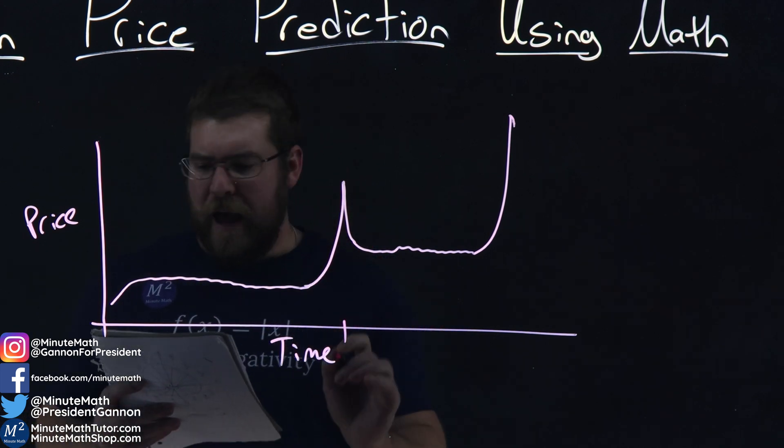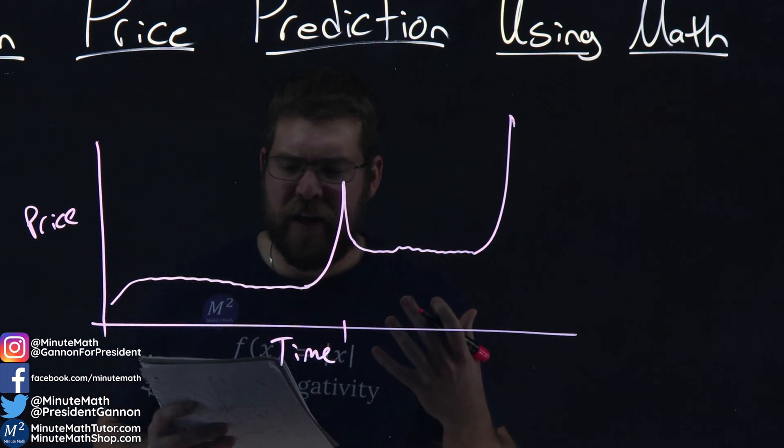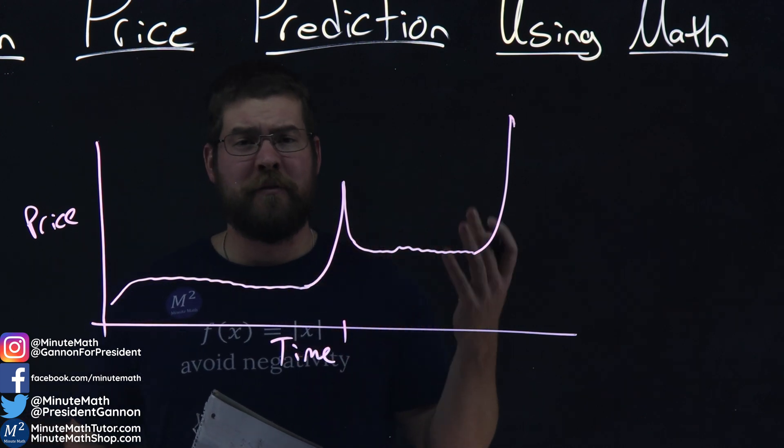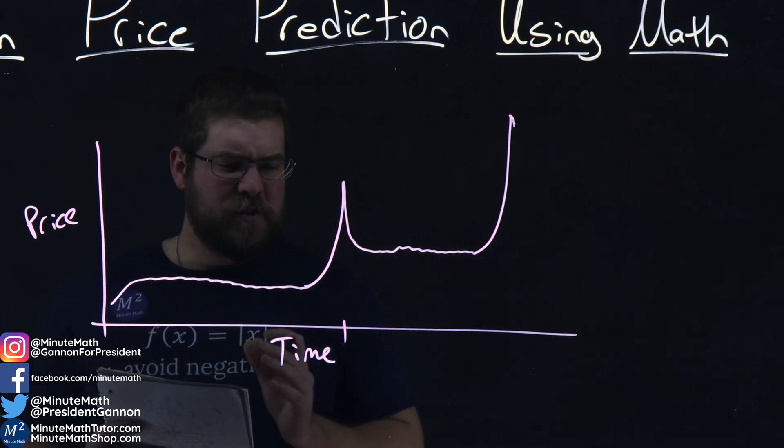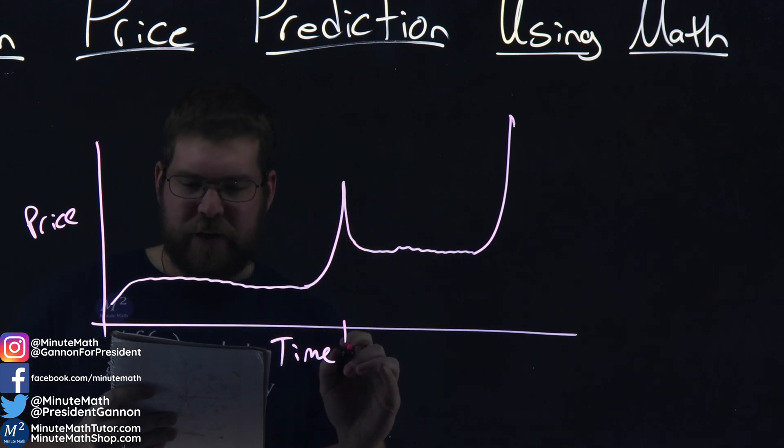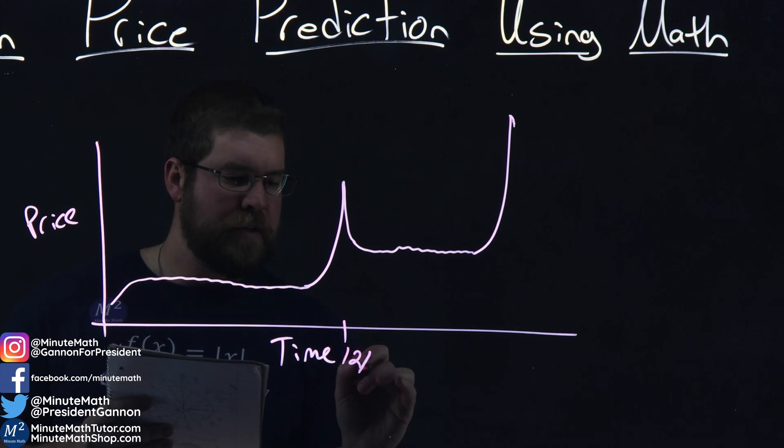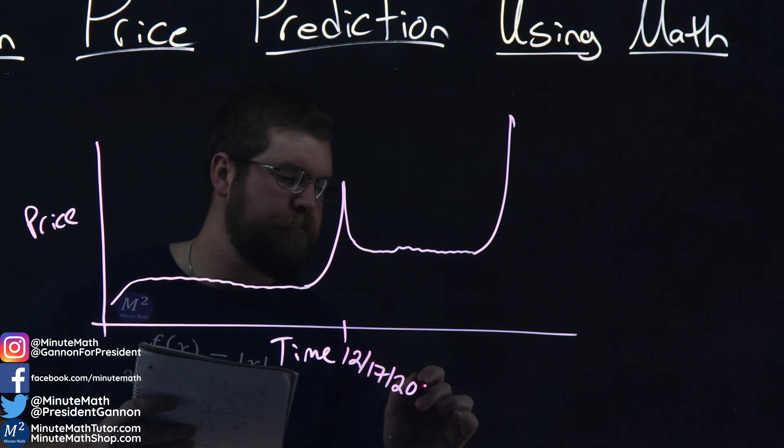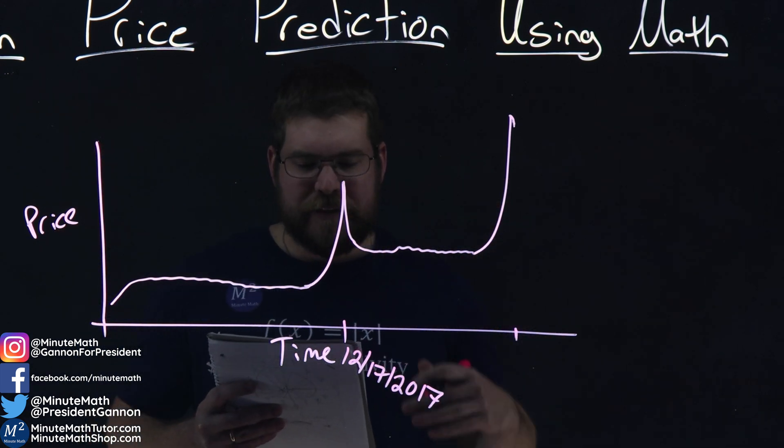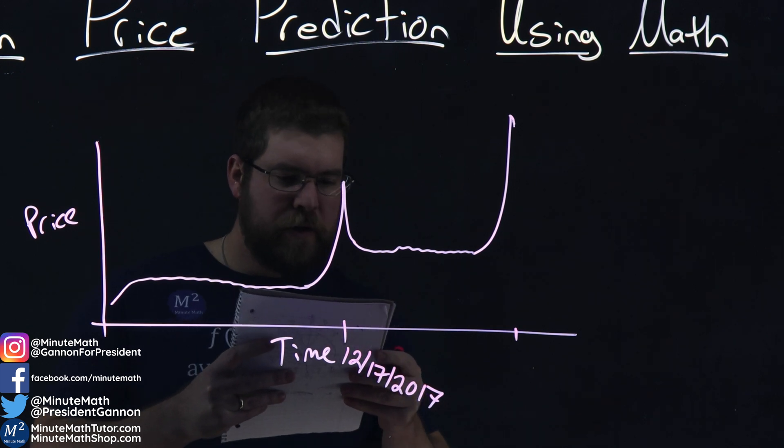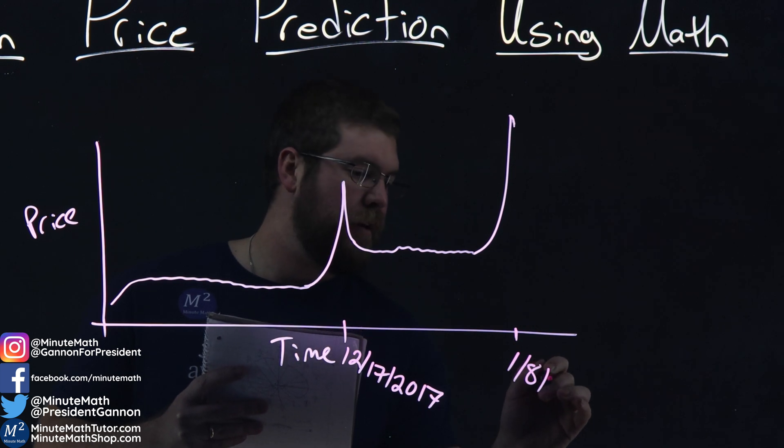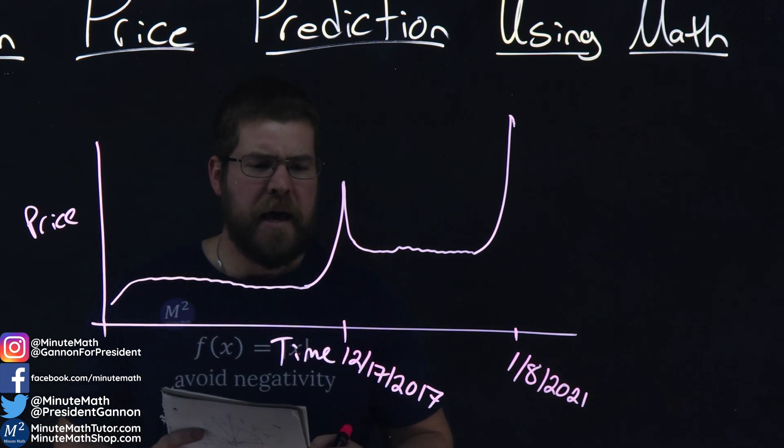This first peak here happened on the highest peak, and I got this data here from the 24-hour high point on a day, because remember, this is traded 24-7. I picked the high point for my data values here, and this happened on 12-17-2017. And currently, we hit a high point, a second peak that happened on January 8th, 2021, a couple days ago.